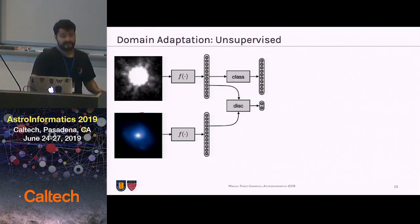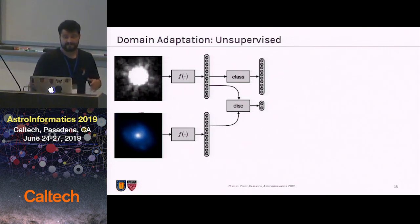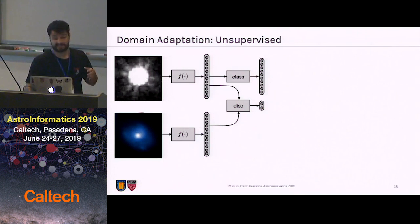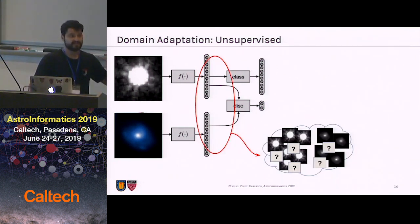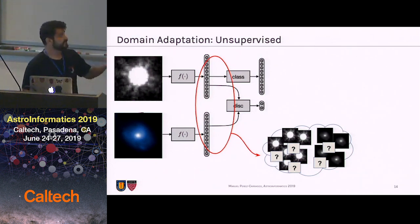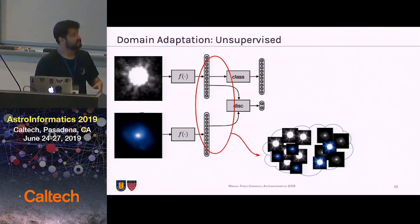In unsupervised domain adaptation, we deal with the task when no labels are available on the target domain. Current state-of-the-art methods use adversarial learning to perform the task, using neural networks as feature extractors and a discriminator for distinguishing if a sample comes from the source or the target. We encourage the feature extractor to generate indistinguishable representations between source and target, finally aligning both distributions. The problem is that given we don't have labels on target, we can fall into mode collapse or even flip the classes, generating poor representations.